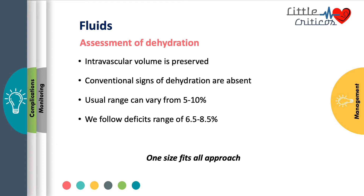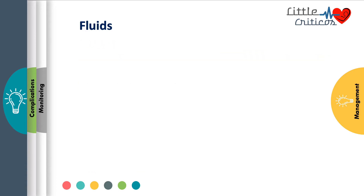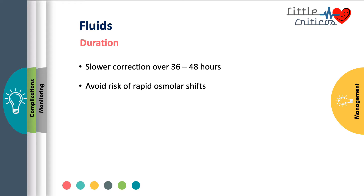DKA is one condition where a one-size-fits-all approach is used. We usually follow a deficit range of 6.5 to 8.5% while correcting for DKA. During the first hour, if the child is in hypotensive shock, we give a 20 mL per kg bolus of normal saline; repeat boluses may be needed based on hemodynamic parameters. In others who are volume depleted but not in shock, a 10 mL per kg bolus of saline is given over 60 minutes. It is always better to correct these children slowly over 36 to 48 hours to avoid rapid osmolar shift and reduce the risk of cerebral edema.